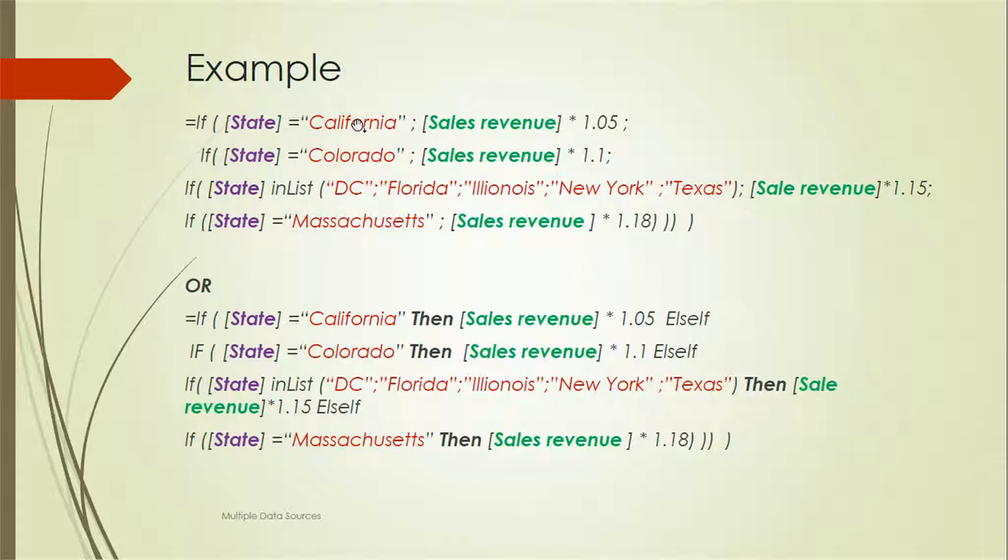This is the condition: if ([State] = "California"), then [Sales revenue] * 1.05. This is the boolean expression - if it's true, then whatever the sales revenue is, we multiply it by 1.05. This will change the sales revenue value dynamically in the report.